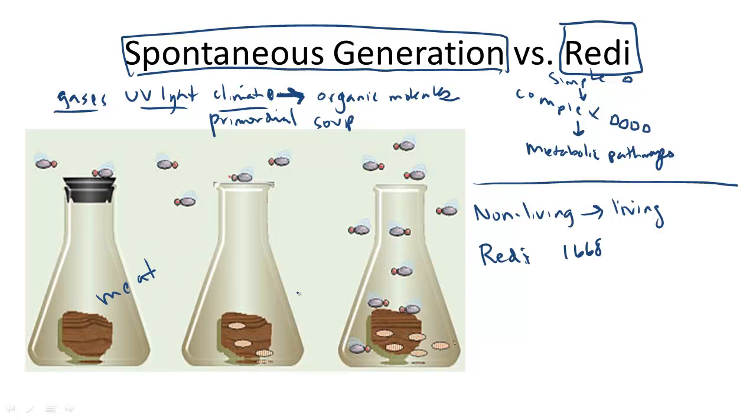He set up this famous experiment. And he entertained the idea that perhaps if the flies were exposed to the meat, they would circle around the top of the flask. But he hypothesized that they would not be generated from the meat if the flask was closed. So what he did was he actually is thought of to have the first replicable, legitimate sort of scientific experiment designed, because he had a control group, which was the open flask with the meat,